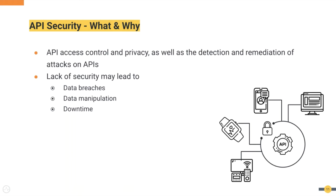These security vulnerabilities can lead to theft of sensitive data such as medical, financial, and personal information. They can also lead to data manipulation and can even result in unavailability of core business functionalities, causing financial losses. API security is not just about access control — it should consider privacy, detect attacks, and have a strategy to take corrective measures against these attacks.